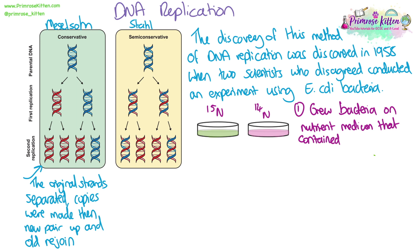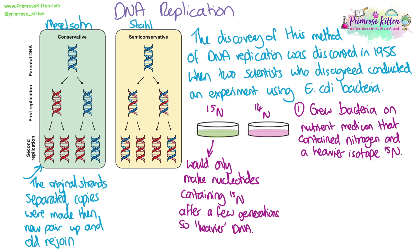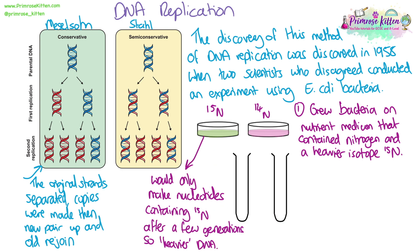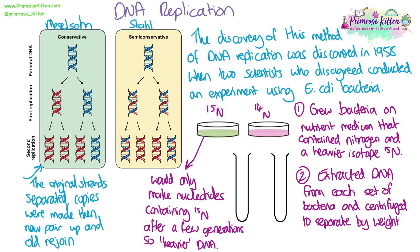In the first stage of their experiment, they created two control groups, growing E. coli bacteria on two different types of nutrient medium — one containing a heavier, denser isotope of nitrogen, nitrogen-15, and one containing normal nitrogen-14. Bacteria grown with only nitrogen-15 would incorporate it into their nucleotides, so after a few generations all nucleotides in their DNA would contain this heavier isotope. They then extracted DNA from each set of bacteria and centrifuged it to separate the DNA by weight. The denser DNA from bacteria grown in nitrogen-15 sank lower in the centrifuge tube than the lighter DNA from bacteria grown with nitrogen-14.